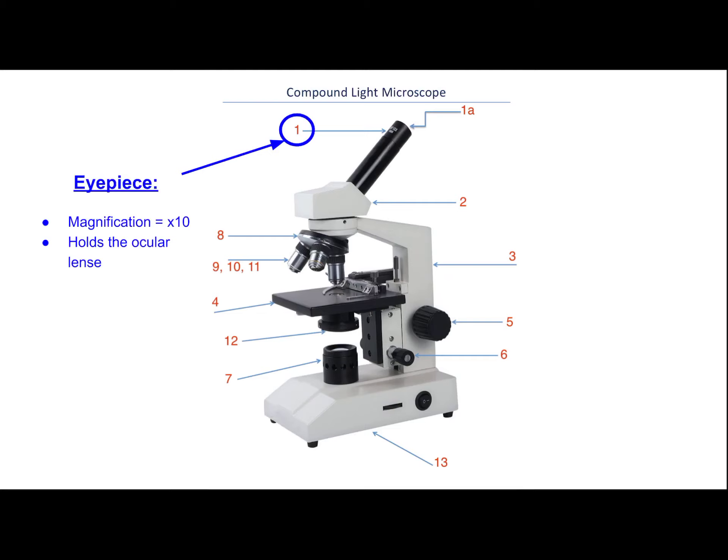The eyepiece is the one that's going to be closest to your eye. The piece of glass in there is called the ocular lens. The ocular lens has a magnification of 10 times — you can see the number on the actual lens itself. Every microscope should have a number printed there for how much that single piece of glass will magnify the image.